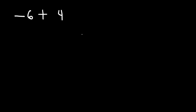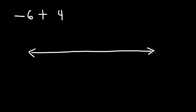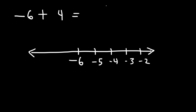Now let's say if we have a negative number: negative 6 plus 4. Go ahead and try that example. So let's start with negative 6 and then add 4 by traveling 4 units to the right: negative 5, negative 4, negative 3, and negative 2. So negative 6 plus 4 is negative 2.